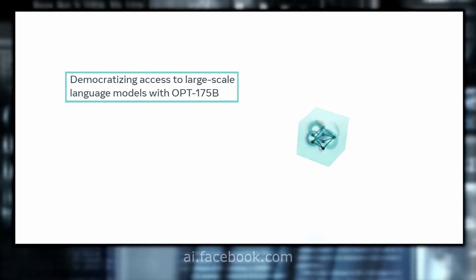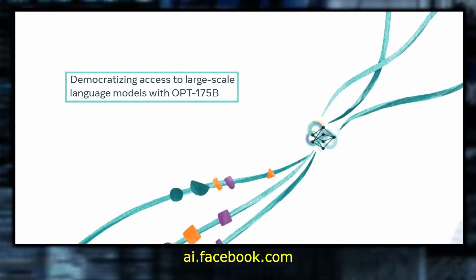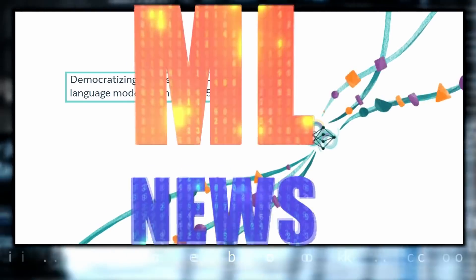Welcome to ML news. My name is Yannick. We discuss the newest happenings in the machine learning world. So much time has passed since the last news that I'm having to split this episode into two parts — you're seeing part one right now, and part two is going to be released in a few days. Facebook releases a giant language model the same size as GPT-3, but they're releasing it out into the wild — not entirely, as we're going to discuss. This is the first time OpenAI gets serious competition from open source models.